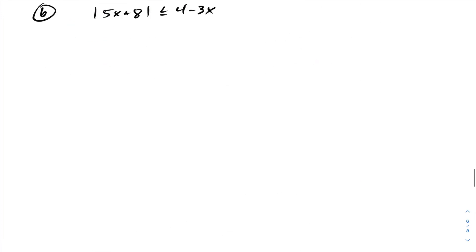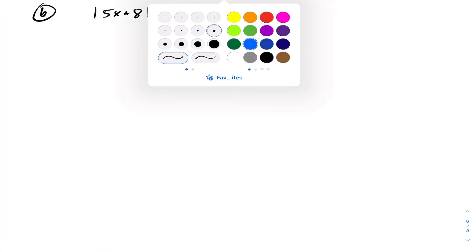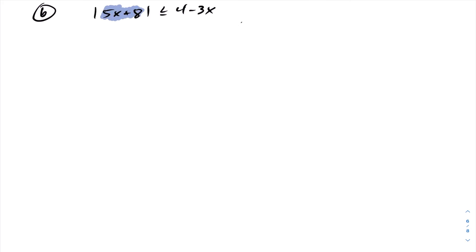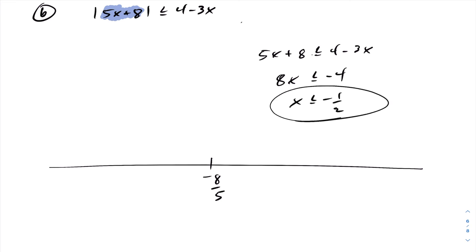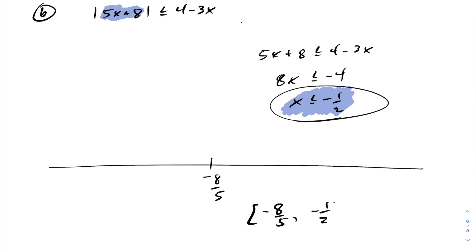For the next absolute value inequality, same idea. We want to find out when the absolute value is acting on 0, which happens at negative 8 over 5. Pick a value to the right of negative 8 over 5 and the absolute value will be positive. So I can solve this absolute value inequality by dropping the absolute value symbol and solving the linear inequality. Adding 3x to both sides, subtracting 8, and dividing, we end up getting x is less than or equal to minus 1 half. The answer on the right-hand side goes from square bracket negative 8 over 5 going up to minus 1 half, with a square bracket because we have equality.